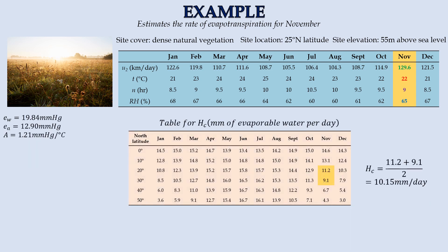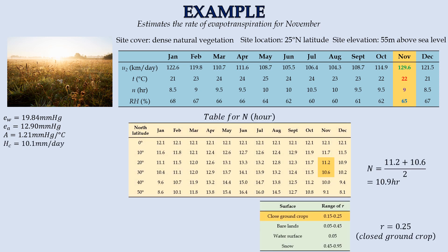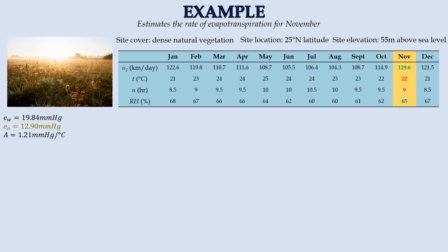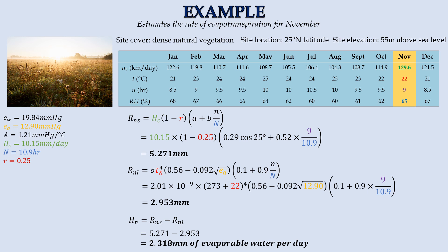Up next, the solar radiation for this site in November is equivalent to 10.15 mm of evaporable water per day. Also, the site is supposed to receive 10.9 hours worth of sunshine for the studied month. For dense natural vegetation, we assume it is closed ground crops, and this gives us the albedo of 0.25. From these parameters, the incoming solar radiation into the reflection surface is 5.271 mm of evaporable water per day.